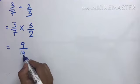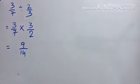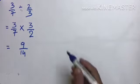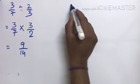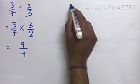Multiply करो: 3 × 3 = 9 और 7 × 2 = 14। Answer: 9 by 14। यह proper fraction है — proper fraction है तो इसको mix fraction में change नहीं करना।